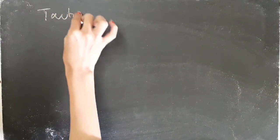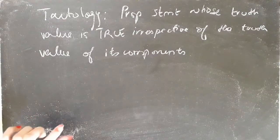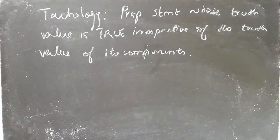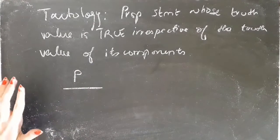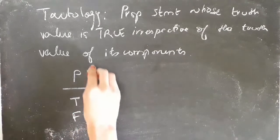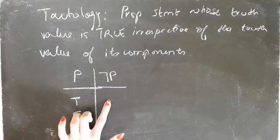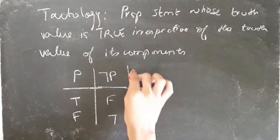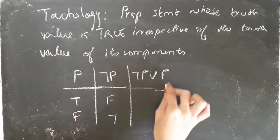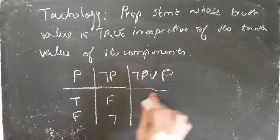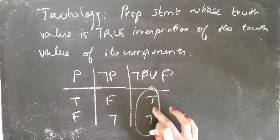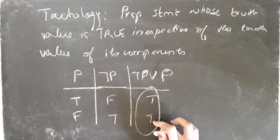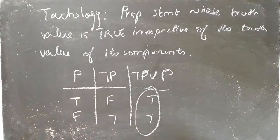Now we move on to tautologies and contradictions. A tautology is a propositional statement whose truth value is always true, irrespective of the truth value of its components. For example, considering P with truth values true and false, the negation of P is false and true. NOT P or P is always true — so this statement is a tautology.